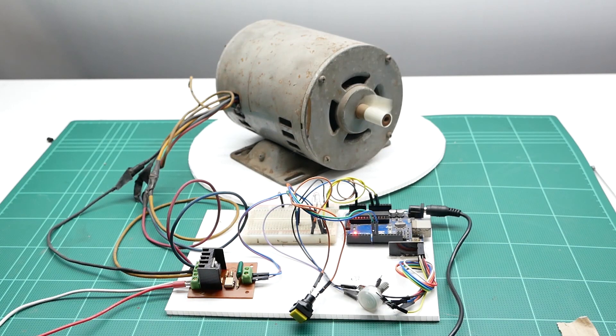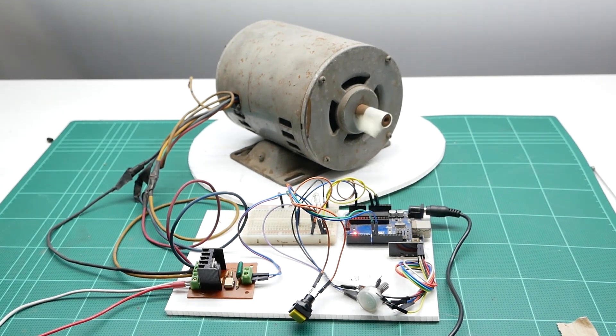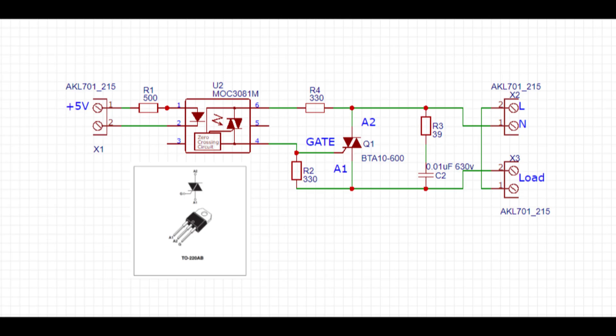In this video, we will study and make a solid-state relay. Let's do it. For the solid-state relay circuit, we use MOC3081 zero-crossing IC as a triac driver. The 500 ohm R1 is used for limiting LED current. The gate resistor value is 330 ohms. The snubber circuit consists of R3 and C2. Input voltage of 4 to 5 volts is used for control.